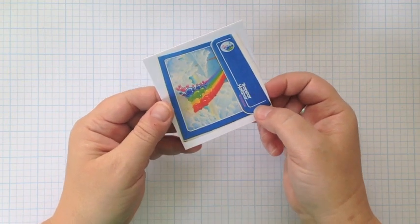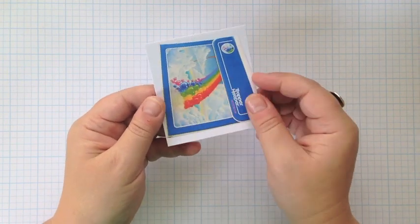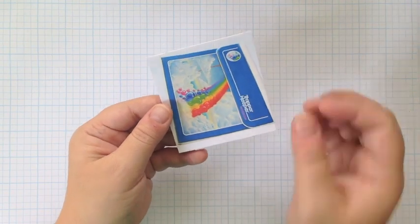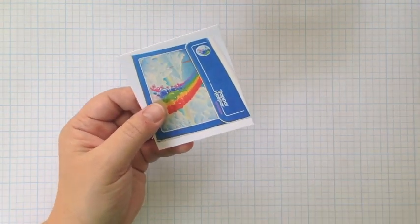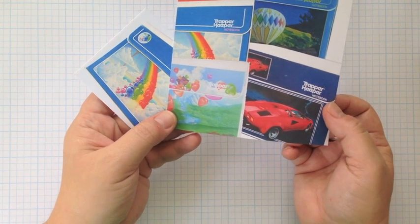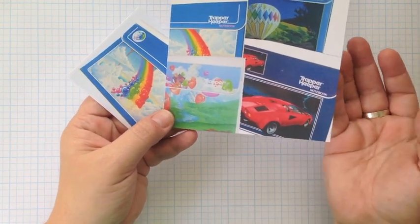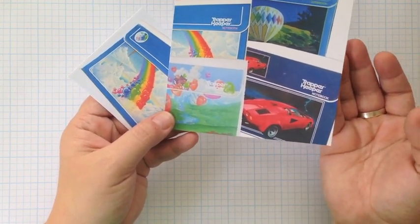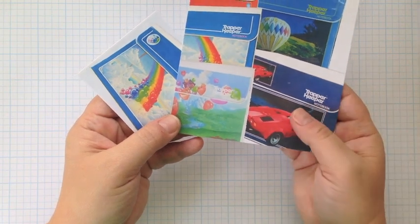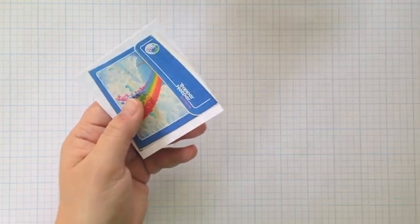The Trapper Keeper was a very cool way to hold your papers, your folders. It was new, it was different, it closed with velcro, kept everything in tight, and they were just interesting to look at. They came in lots of bright colors, they had images on them that were similar to posters that you might have on your wall, and they just made school a little bit more fun.